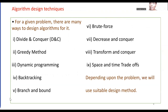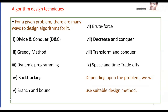Then there are algorithm designing techniques. There are different techniques to solve any particular problem — different ways you can arrive at a solution. These techniques include divide and conquer, greedy method, dynamic programming, backtracking, branch and bound, brute force, decrease and conquer, transform and conquer, and space-time trade-off. In divide and conquer, we divide a problem into sub-problems, solve them individually, and then combine all sub-solutions to get the complete solution.